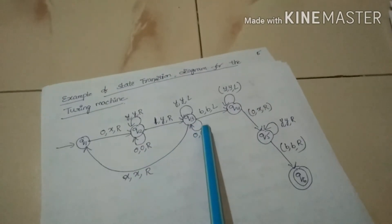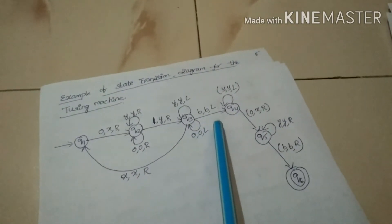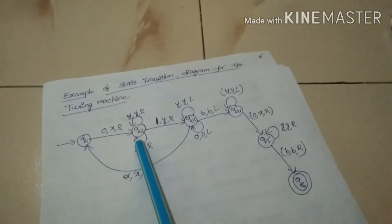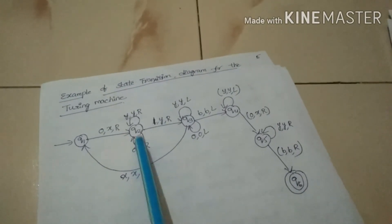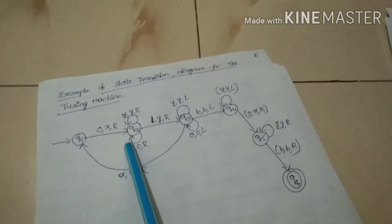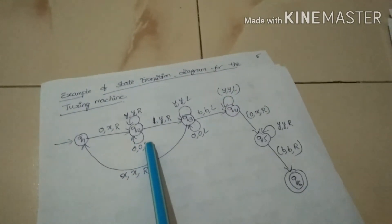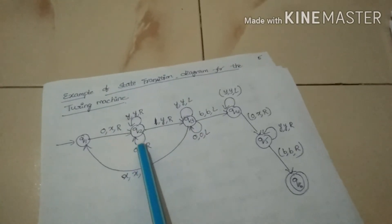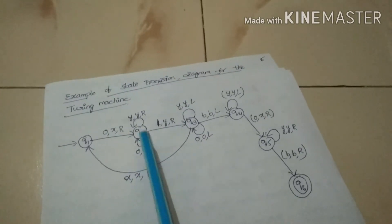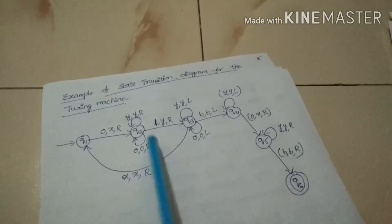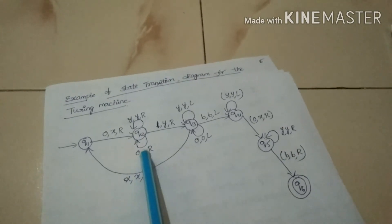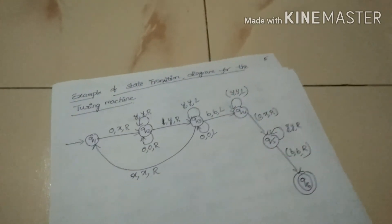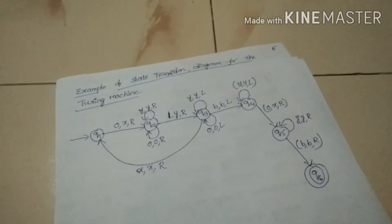The head of the machine in state Q2 is now scanning the value Y. The loop at state Q2 with label (Y, Y, R) will move the head position of the Turing machine in the right direction without changing the state. The loop at state Q2 with label (0, 0, R) will also move the head position in the right direction without changing the current state.